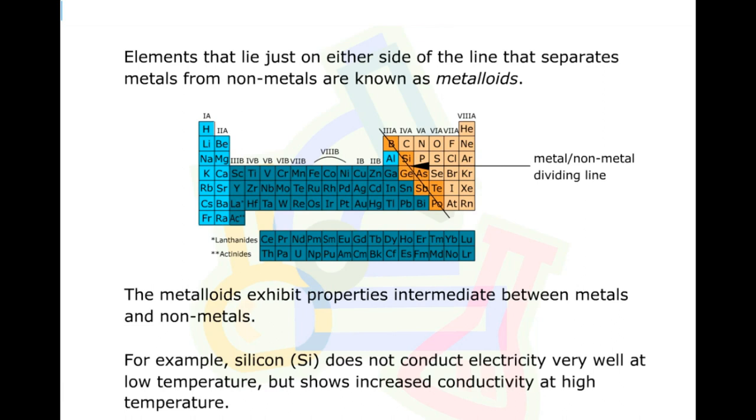Look here. Look in the periodic table. The metalloids exhibit properties intermediate between metals and non-metals. For example, here, silicon does not conduct electricity very well at low temperature but shows increased conductivity at high temperature. You understand? That is the main property of metalloids.